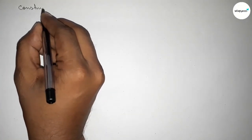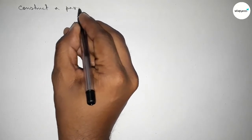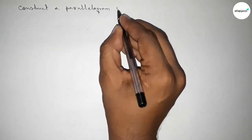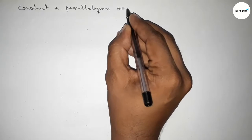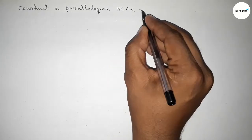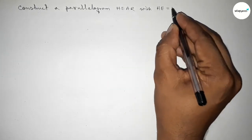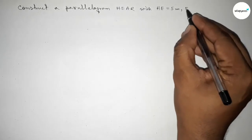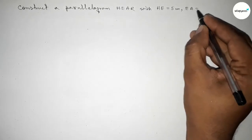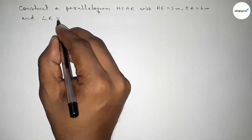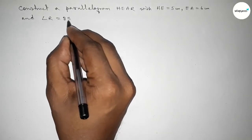Hi everyone, welcome to Sis Chair Classes. Today in this video we have to construct a parallelogram HEAR. The given measurements are HE equal to 5 centimeter, EA equal to 6 centimeter, and angle R equal to 85 degree.